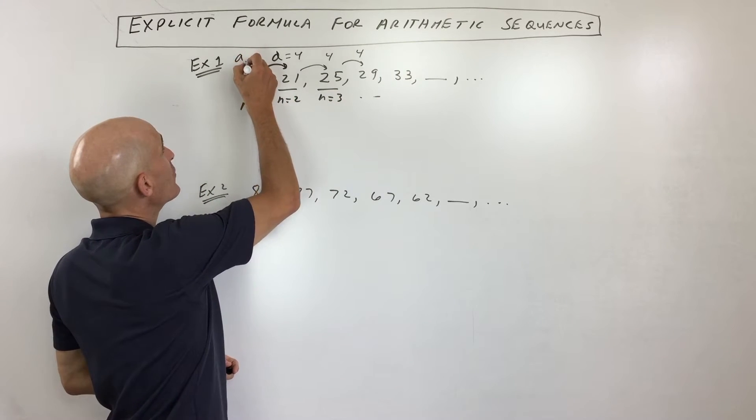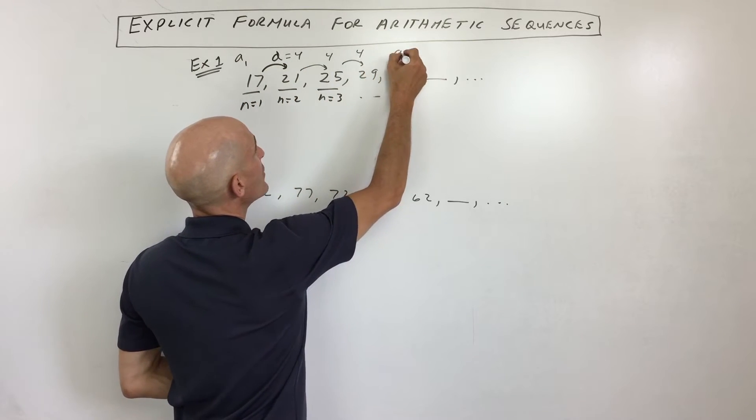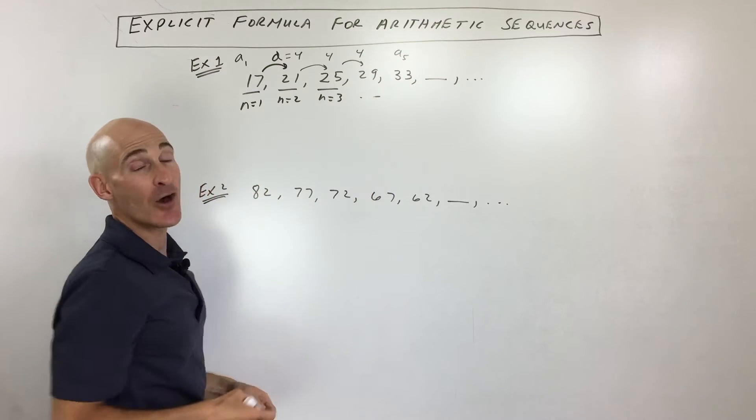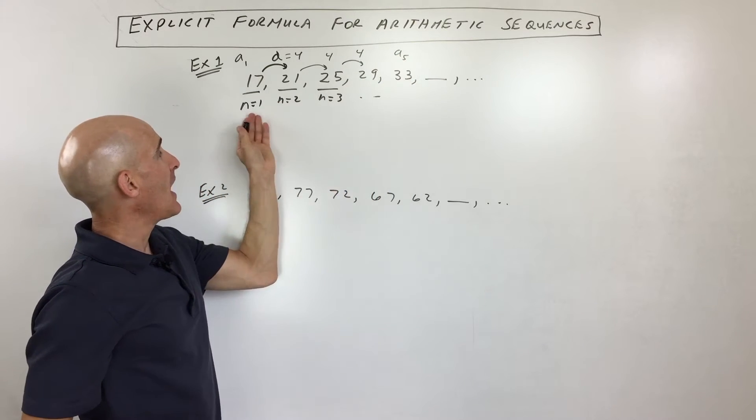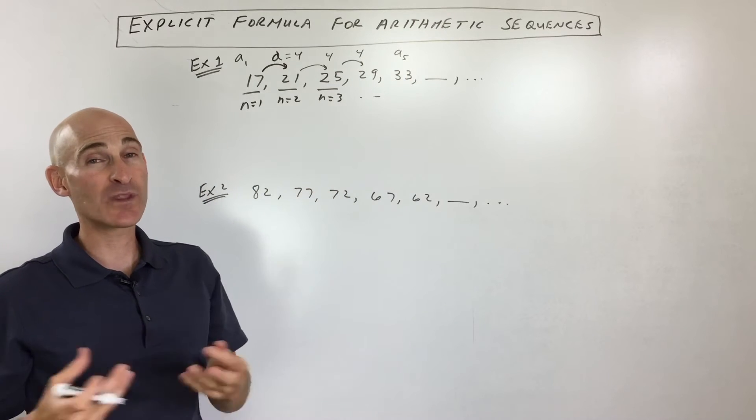Now, another notation that you want to pay attention to is like a sub 1, a sub 2, a sub 3, a sub 4. Let's write over here a sub 5. That means the value of the fifth term. n is the term number that you're on, but a sub n is the value of that term, what that term actually equals.